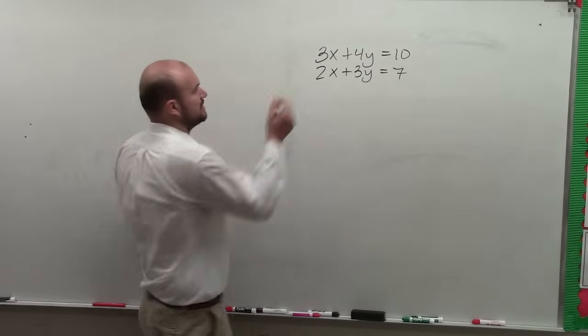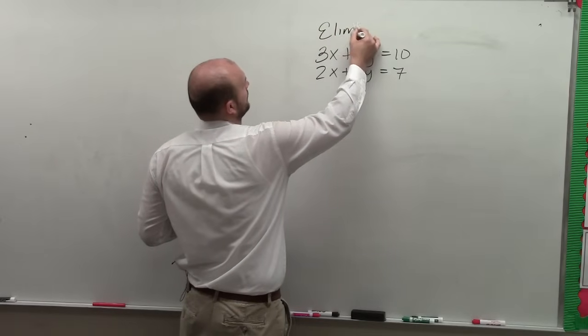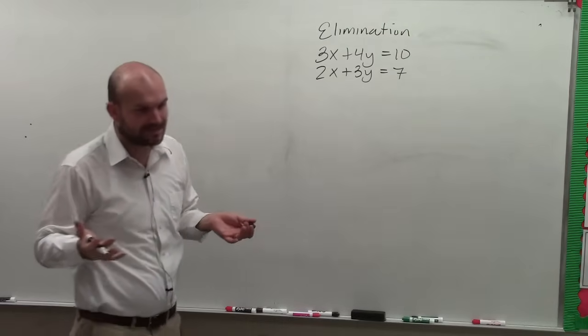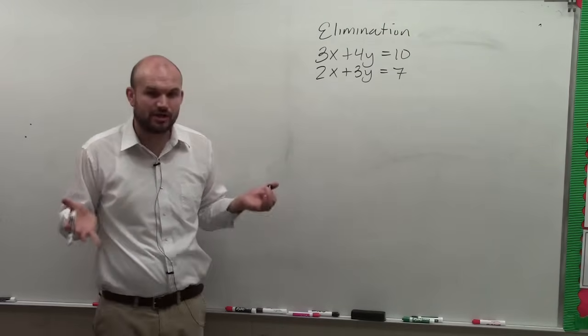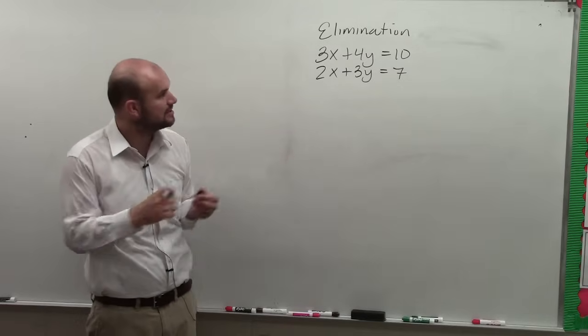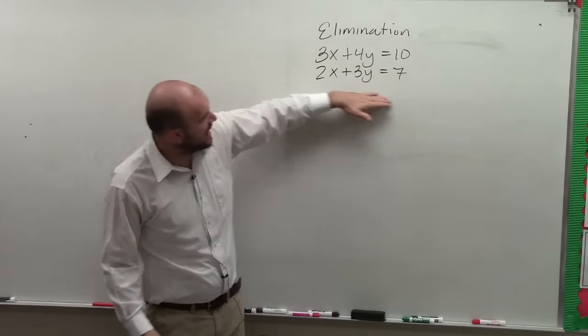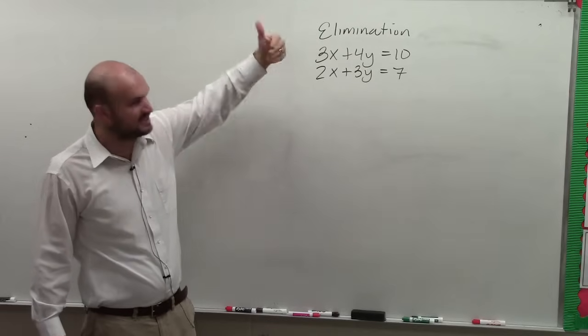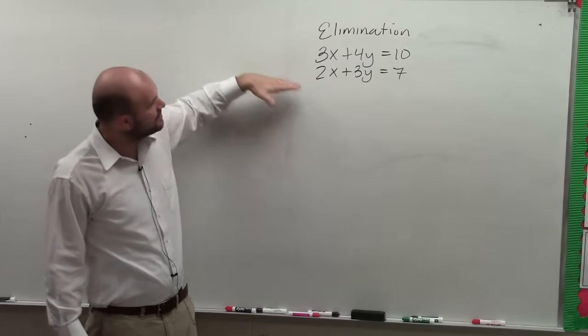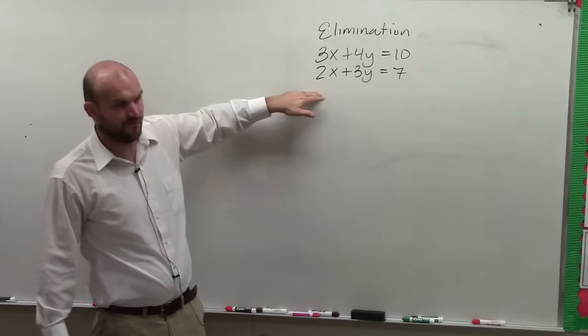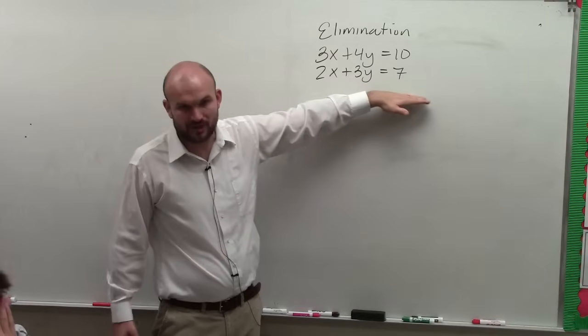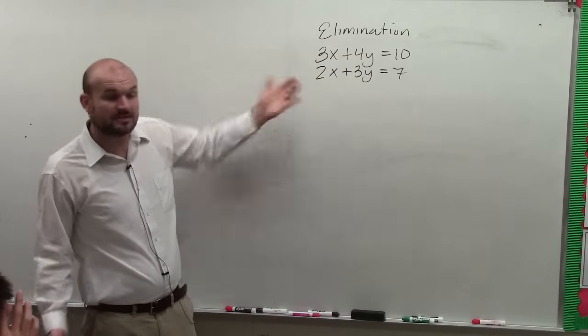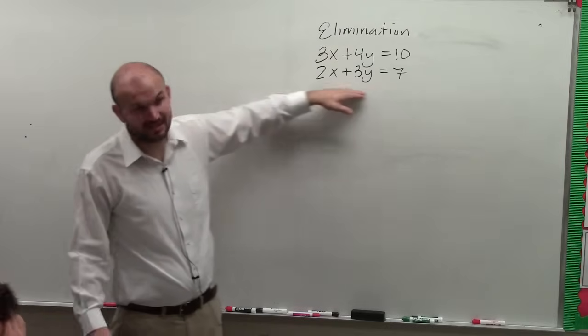So the other method which we call is elimination. And using elimination, what we're going to do is add or subtract our equations to eliminate one of the variables. So if you look at this, when we say eliminate we want to get 0 as a coefficient. If I add these, do I get 0 as a coefficient? If I subtract these two equations, do I get 0 as a coefficient for any variable? No. Sometimes that's going to work, but in this case that does not work.